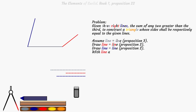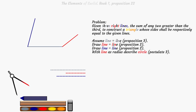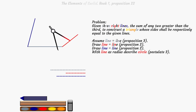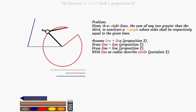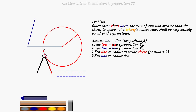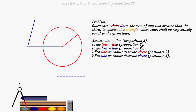With the red line as radius describe a circle. Postulate 3. With the blue line as radius describe a circle. Postulate 3.